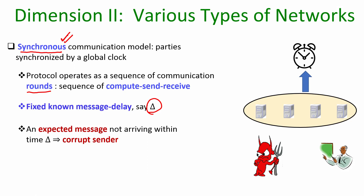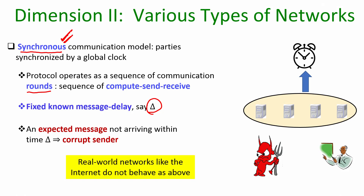An important implication of the synchronous communication model is that if a sending party does not send its expected messages, then the receiving party can conclude that the sender is corrupt. However, even though the synchronous communication model is a very simple abstraction, real-world networks like the internet do not behave like a synchronous communication model, because if parties are at opposite ends of the globe, we cannot come up with an exact value of delta.